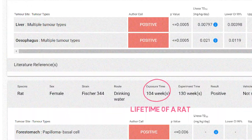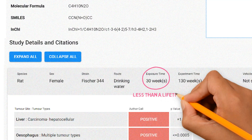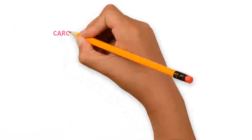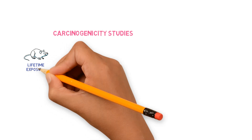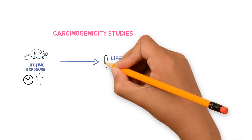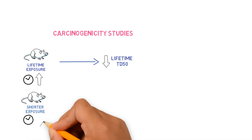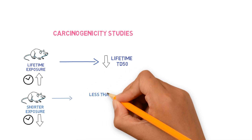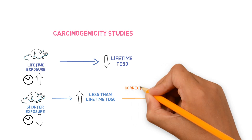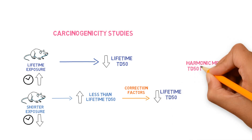Some of these exposures were for less than a rat's lifetime, however the final value of 26.5 corresponds to the harmonic mean lifetime TD50. When carcinogenicity studies are done where animals are exposed for their lifetime, we derive the lifetime TD50 from the study, which will be a relatively low number because the dose that causes tumors is lower when the exposure is longer. For shorter duration studies, a less than lifetime TD50 is obtained, which tends to be higher because a higher dose is needed to cause the same effect. Correction factors are then applied to find a lower value that would correspond to a lifetime TD50.